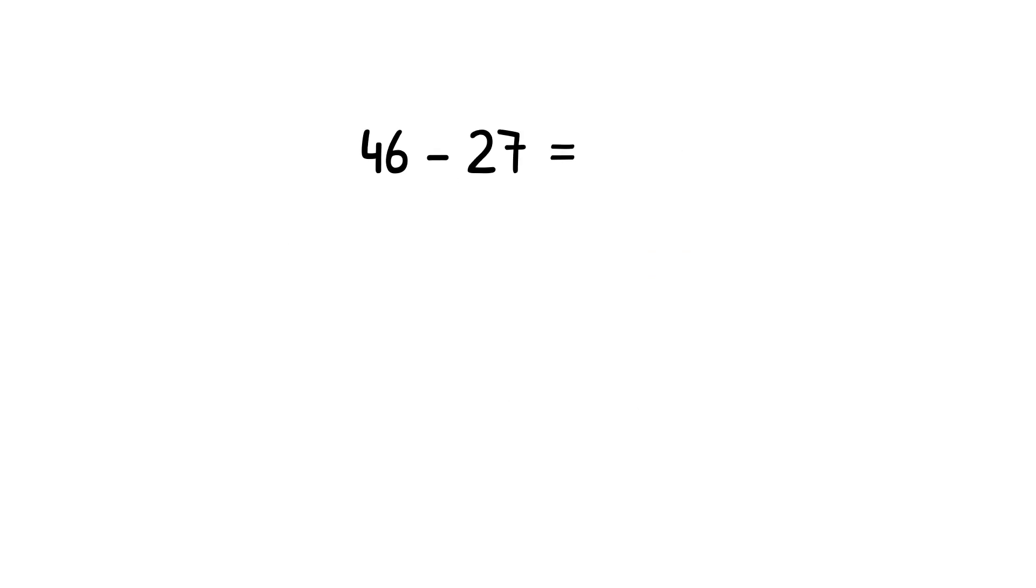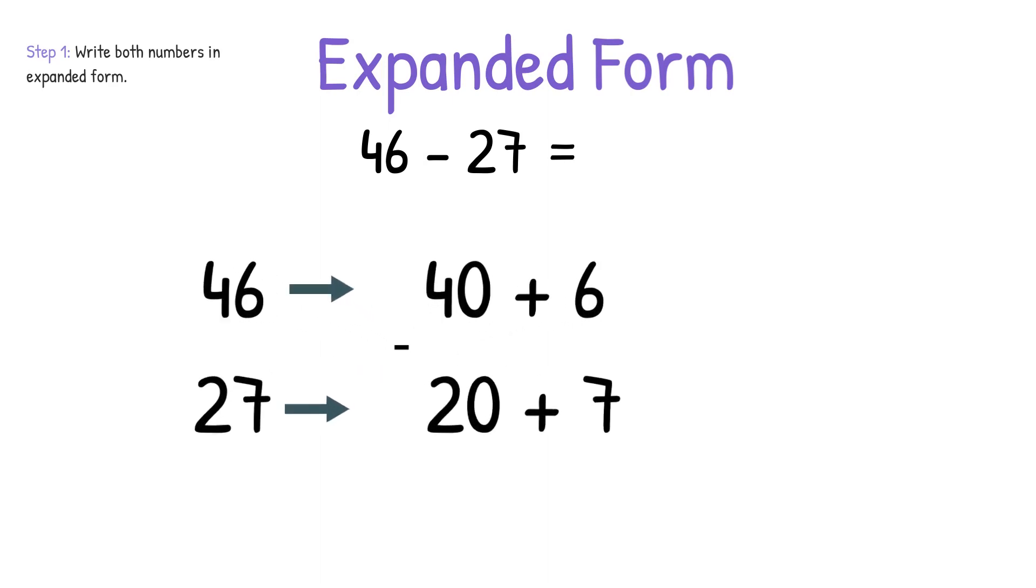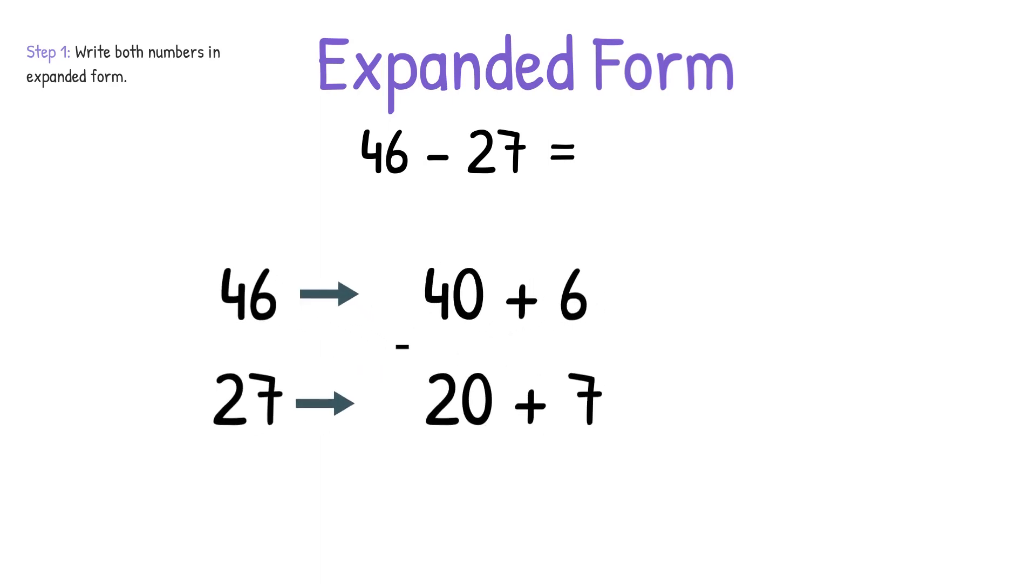Let's try solving the same equation using expanded form. Step one is write both numbers in expanded form. So we will write 46 as 40 plus 6, and we will write 27 as 20 plus 7. Step two is always start subtracting with the 1s, then the 10s. If you cannot subtract the 1s, you need to regroup.